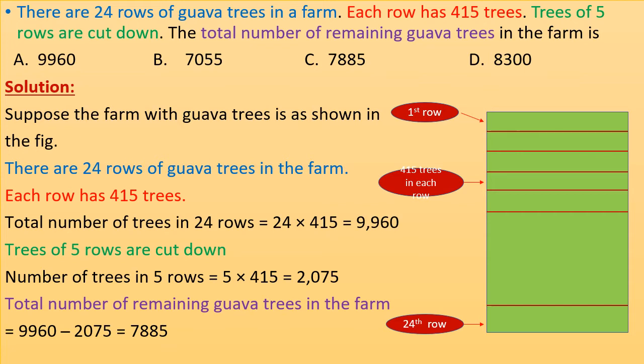Now trees of 5 rows are cut down. So number of trees in 5 rows is 5 × 415 = 2,075. Now total number of remaining guava trees in the farm is 9,960 minus 2,075 = 7,885. Correct option is C.